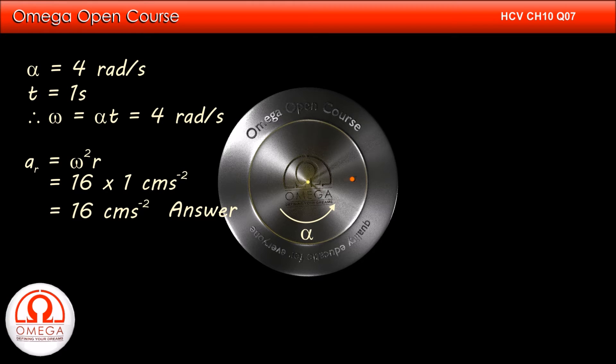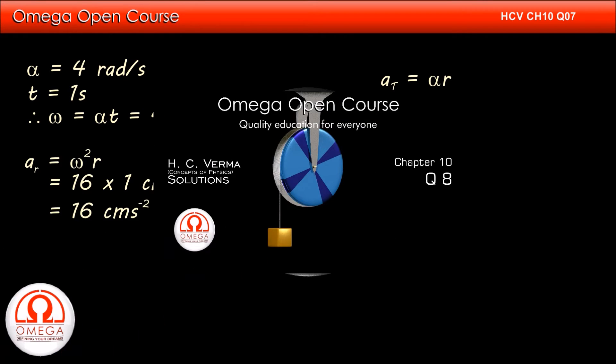The tangential acceleration, that is the linear acceleration of the particle, is given by angular acceleration times radius. If you want to know how this result is derived, you may watch our video of question number 8 of the same chapter. The link for the video is shown on the screen and given in the description below.